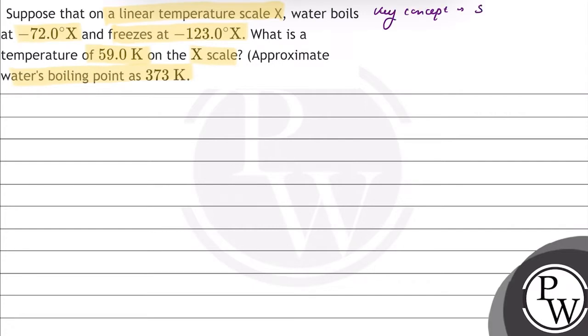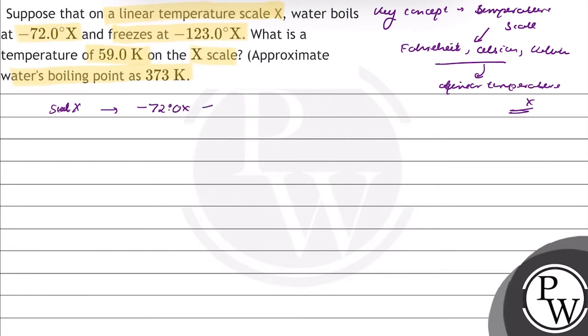For this question, key concept is temperature scale. We can measure temperature in Fahrenheit scale, Celsius scale, and Kelvin scale. We can make an approximate scale or linear temperature scale X. This question is given that on linear temperature scale X, water boils at -72°X and water freezes at -123°X.